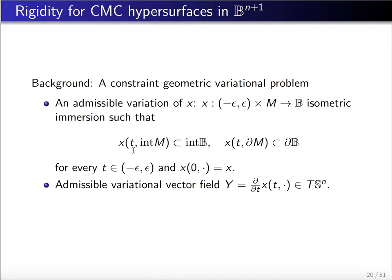It maps the interior of M into the interior of the ball, and it maps the boundary of M into the boundary of the ball, that is the sphere, for every t. The admissible variation vector field Y, which is the derivative of x with respect to t, will be tangent to the sphere.